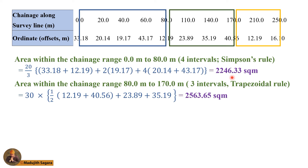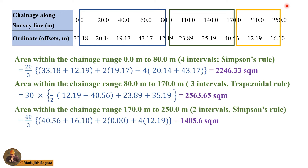Then for the area within the chainage of 80 to 170, we use the trapezoidal rule. Here you can see the way of dealing with the trapezoidal rule between chainages 80 and 170. Then for the next set from 170 to 250, we use Simpson's rule with an interval of 40 meters, and the Simpson's rule equation is applied accordingly.